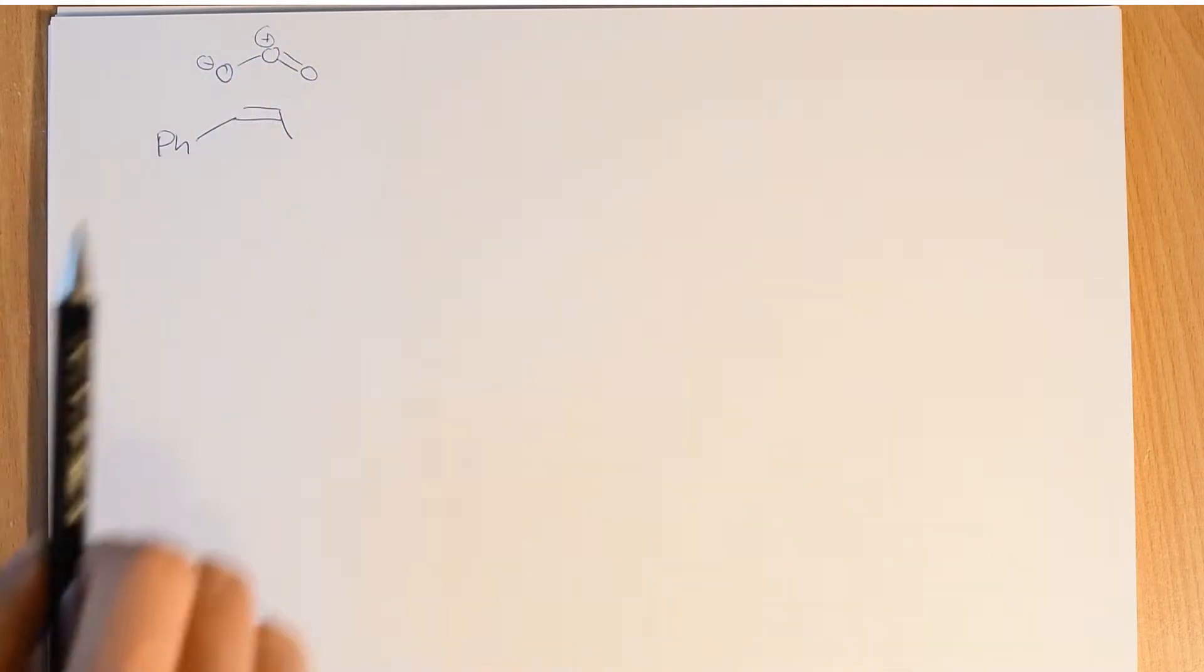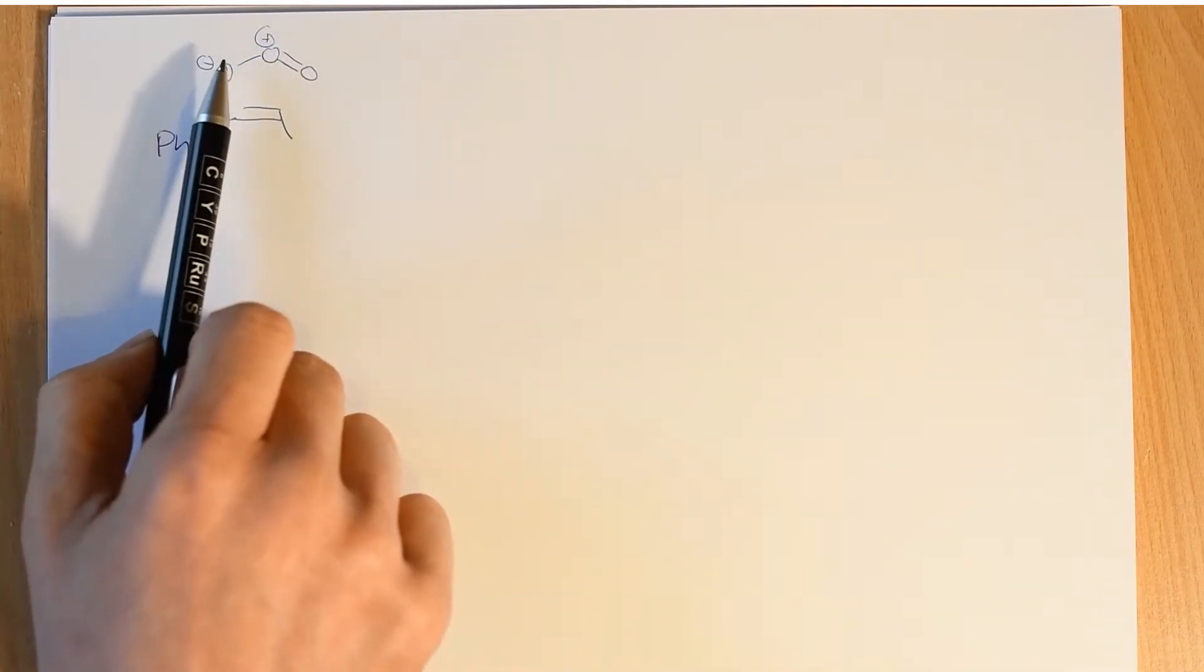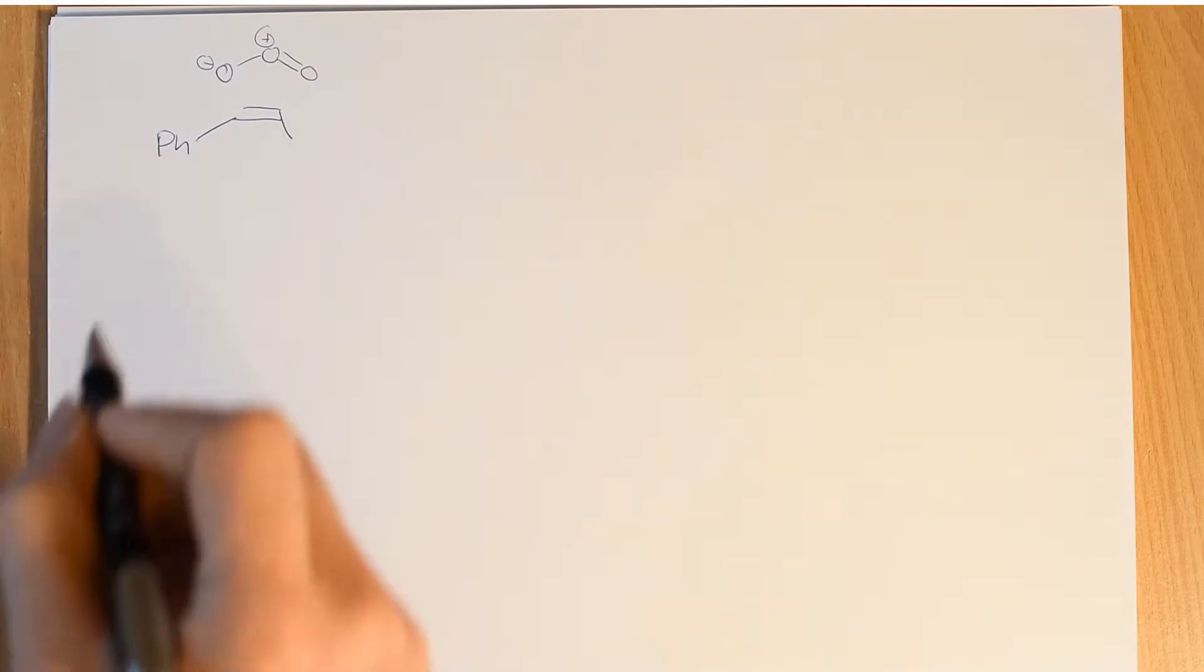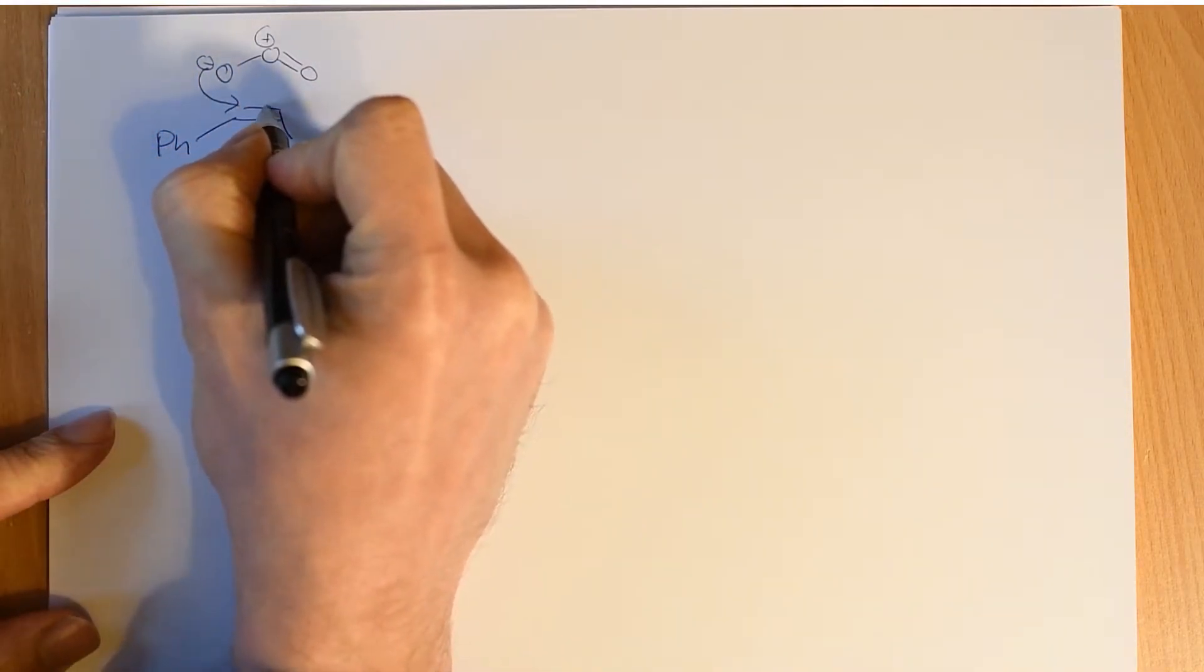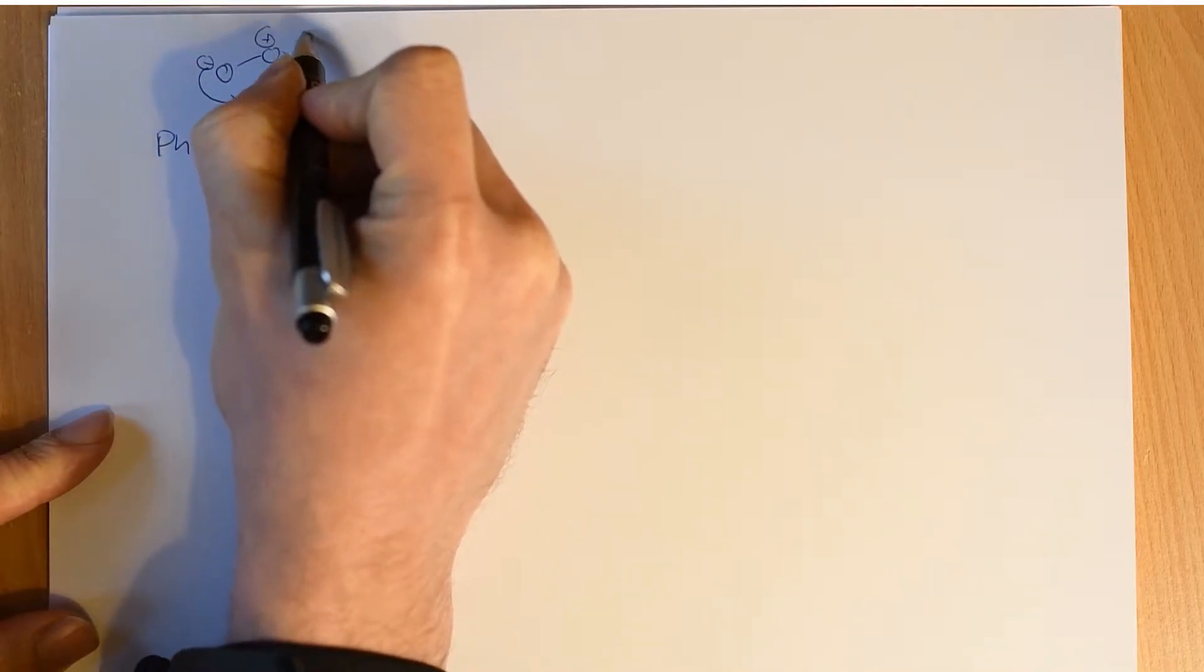Now the only way to get rid of this formal positive charge is to attack this oxygen here, so that pair of electrons, one of those two pairs of electrons can be given to the central oxygen. So it's a 1,3 dipole. Positive on this end, negative on this end. The negative end can attack the double bond, while the other end is attacked by that double bond, and you can relieve the charge on the central oxygen.